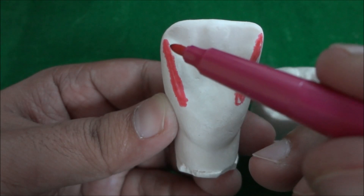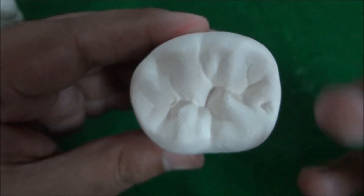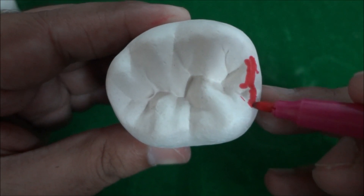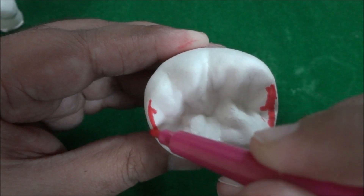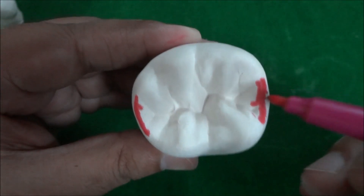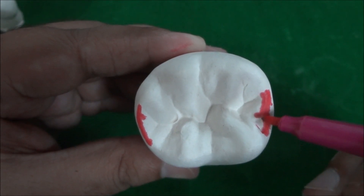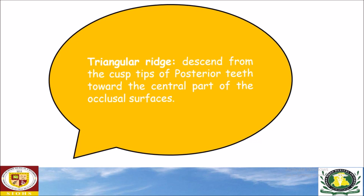And the ridge present on the lingual surface of the distal surface is known as the distal marginal ridge. Similarly, on this molar you can see a marginal ridge on the mesial surface — this ridge is known as the mesial marginal ridge — and this ridge is known as the distal marginal ridge.